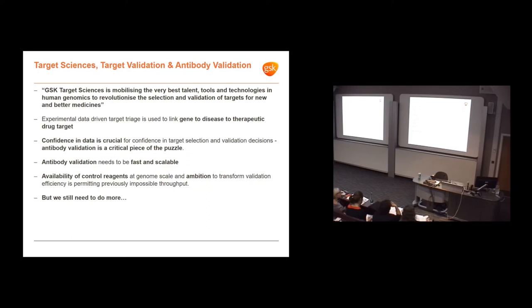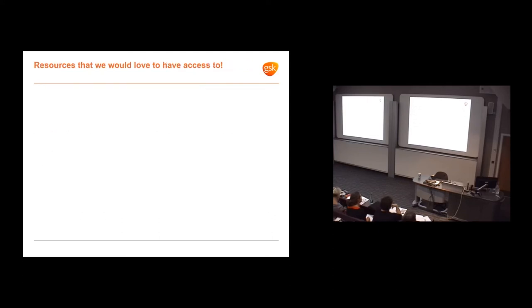But we need it to be fast and scalable, able to do very large numbers. One key benefit we've had recently is the availability of control reagents off the shelf and the ambition of our leadership to do things at scale. It's really enabling us to do things that were previously impossible throughput. But we still need to do more and the community needs to do more.